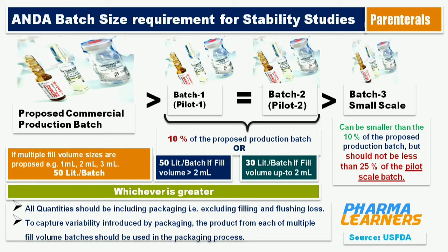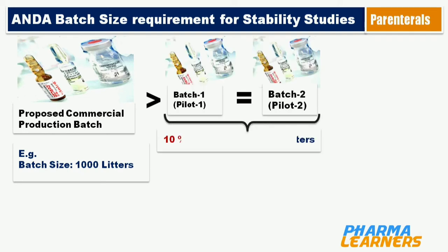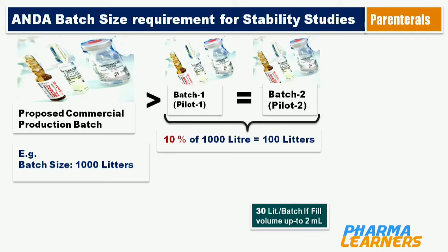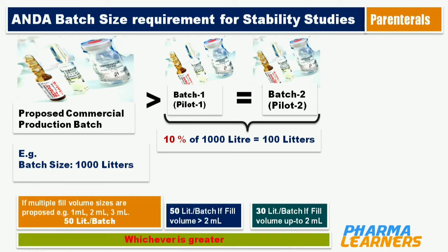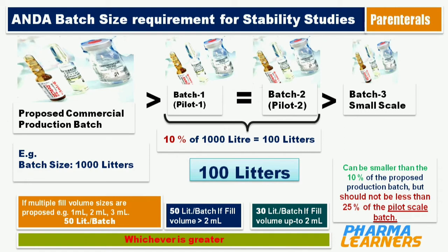Let's consider an example where the proposed commercial batch size is 1000 liters. So 10% of 1000 liters is 100 liters. Since 100 liters is greater than both 30 and 50 liters, the minimum quantity of the 2 pilot batches is 100 liters each. For the third batch, as per guidance it should not be less than 25% of the pilot batch, so 25% of 100 liters is 25 liters.